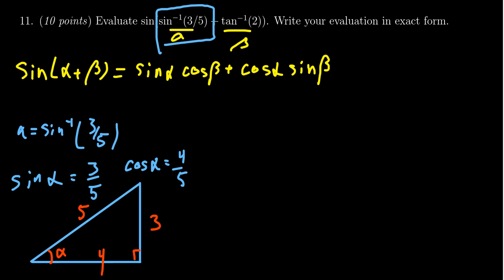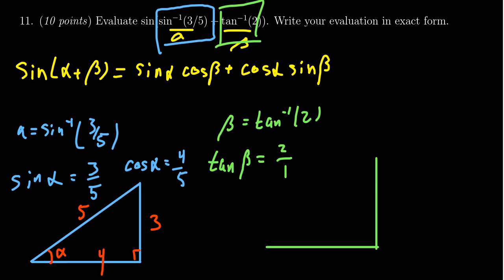Let's move on to tangent inverse of two, which is beta. We have that beta is equal to tangent inverse of two. This tells us that tangent of beta is equal to two, and I'm going to write that as a fraction two over one. If I think of my triangle here, you're going to want to draw two triangles to help you out. This will be the triangle associated to angle beta.